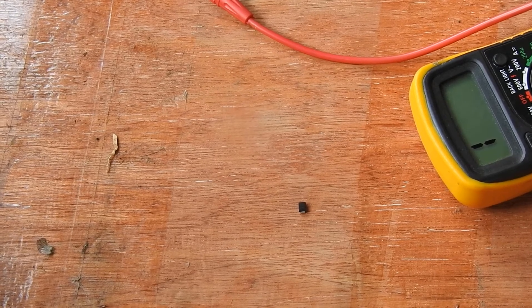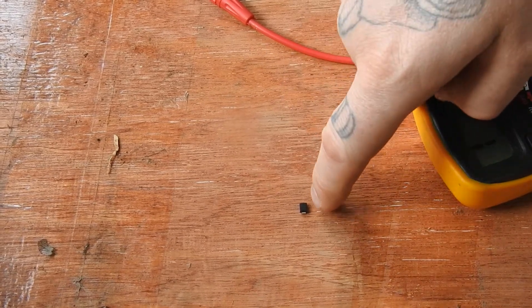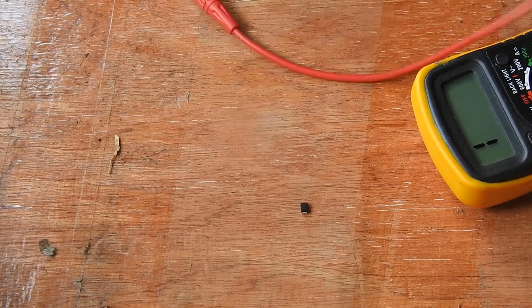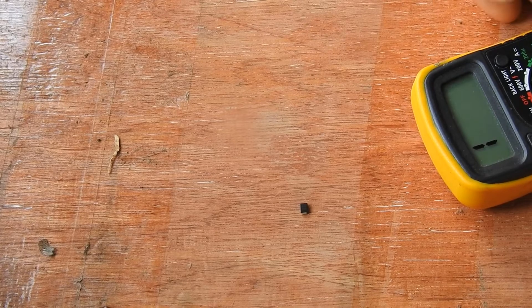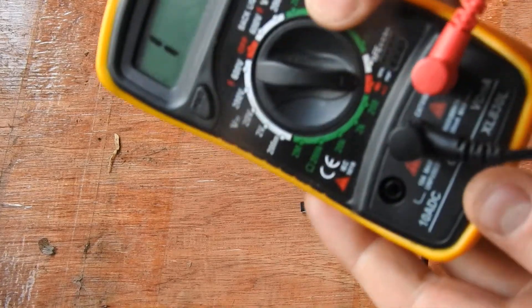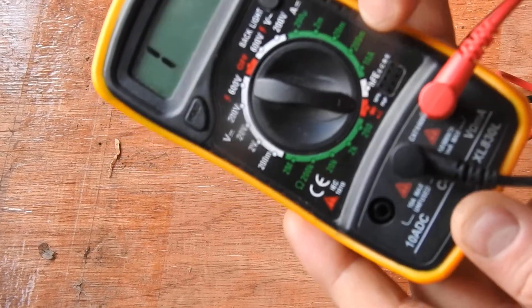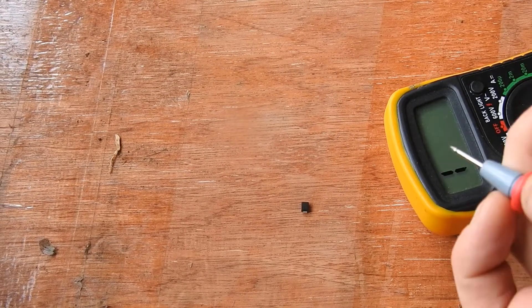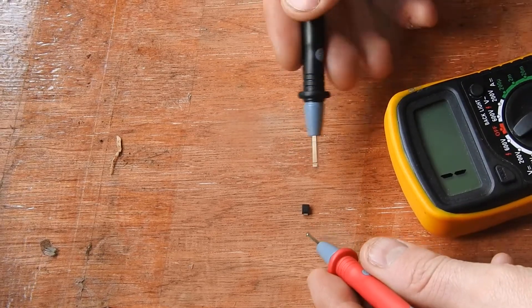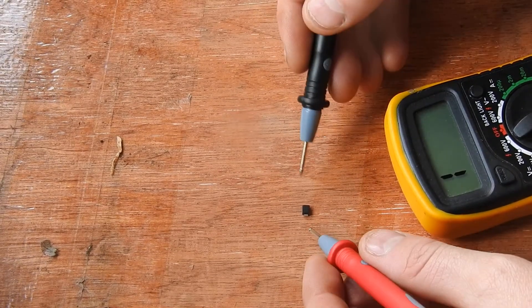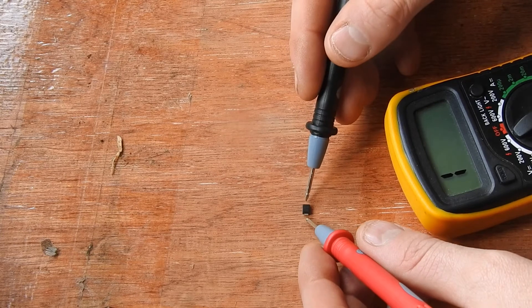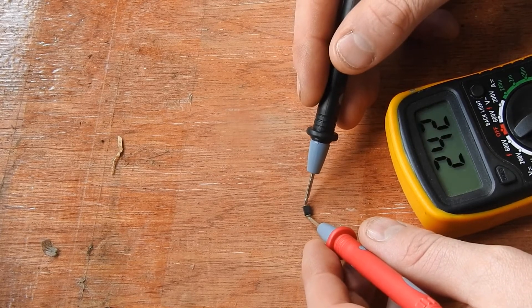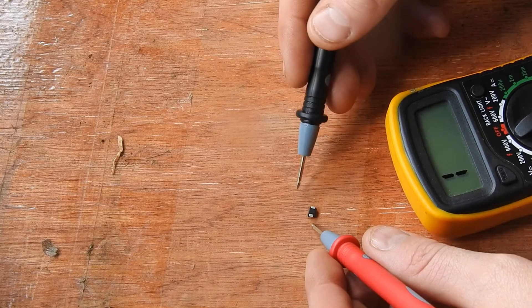Right, so I'm just going to show you how to check the polarity of these diodes with your multimeter. You want to put it into the diode mode just here, and what you do is just put one multimeter lead on one end and one on the other. If you get a reading like I have here...